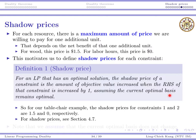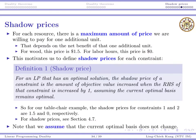According to this definition, for our table-chair example the shadow prices for constraints 1 and 2 are 1.5 and 0 respectively — that's just the maximum amount we are willing to pay for those resources. The related section is 4.7. Now we need to explain the assumption that the current optimal basis remains optimal.